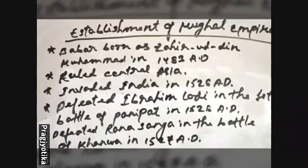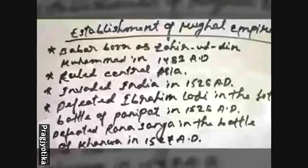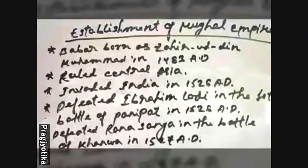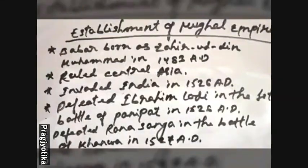Babur had learned that among the kings in India — mostly the Rajputs, as well as the Turks and the Afghans — there was disunity among the Indian kingdoms. Taking this as an opportunity and an advantage, he marched towards India. At that time, India was under King Ibrahim Lodi.